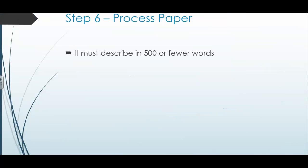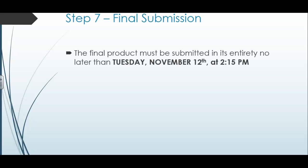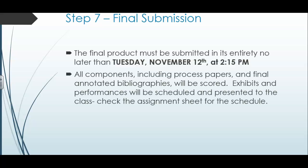Number six is the process paper, done at the very end — 500 words or fewer. You'll include what you picked, why you picked your topic, why you're conducting your research this way, what category you picked and why, and how your project relates to the NHD theme. This will be done sometime in April. Number seven is your final submission — I'll post the exact due date on Google Classroom, but it will be around the second week of April. This is when you submit everything together.